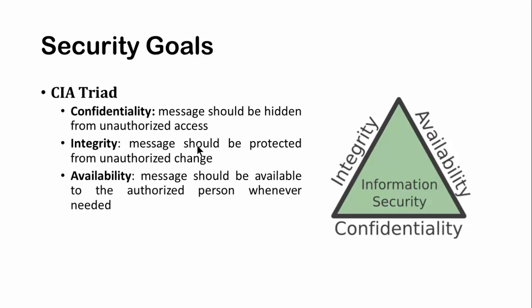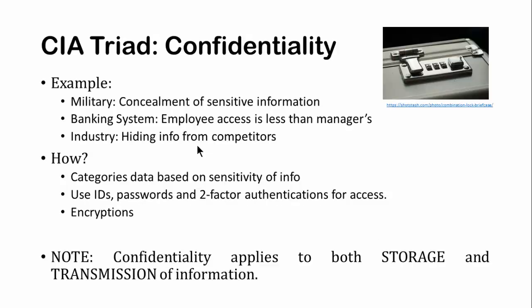Integrity, confidentiality, and availability are the three chief goals forming the CIA Triad. C stands for Confidentiality - the message should be hidden from unauthorized access. Integrity means the message should be protected from unauthorized change; modification can take place only through an authorized person. Availability means the message should be available to the authorized person whenever needed. Confidentiality maps to a real-world scenario like a locker - you have confidential papers inside a locked locker, and only the authorized person with the key can access them.